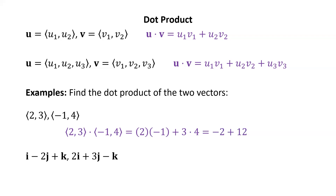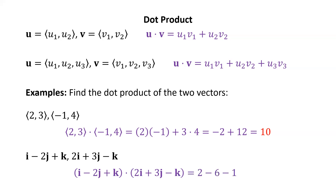Now the dot product of two vectors in three-space: (i - 2j + k) dotted with (2i + 3j - k). We have 1×2 = 2, -2×3 = -6, and 1×(-1) = -1. Adding those up, we get -5.